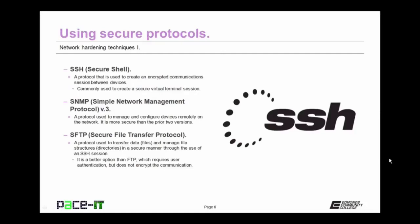One of these hardening techniques is to use secure protocols whenever possible. First up is Secure Shell, or SSH — a protocol used to create an encrypted communications session between devices. It's commonly used to create a secure virtual terminal session and should be used in place of Telnet whenever possible. Then there's SNMP Version 3, Simple Network Management Protocol Version 3 — a protocol used to manage and configure devices remotely on the network. It's more secure than the prior two versions because it supports encryption.